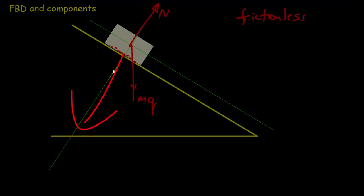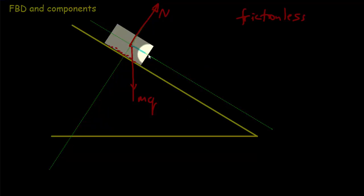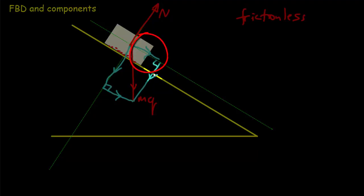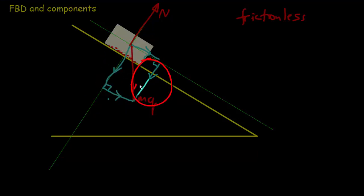I've drawn my two directions: perpendicular to the ramp and parallel to the ramp. I take a vector in one direction and add it to a vector in the other to create a parallelogram with right angles. The vectors across from each other in the parallelogram are identical. This angle theta of the ramp equals this angle theta in the parallelogram — as one angle increases, the other increases the same way. This angle here would also be theta.